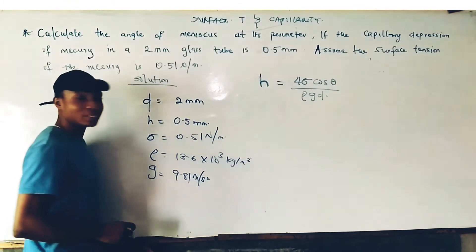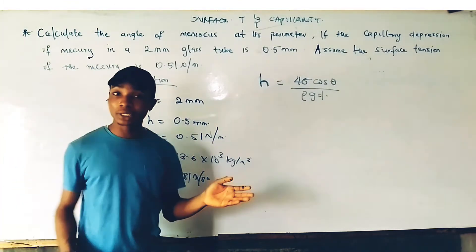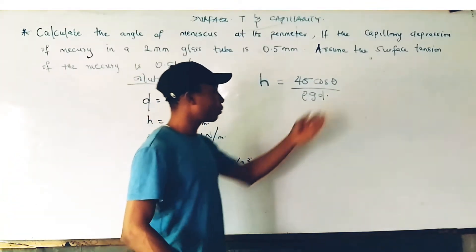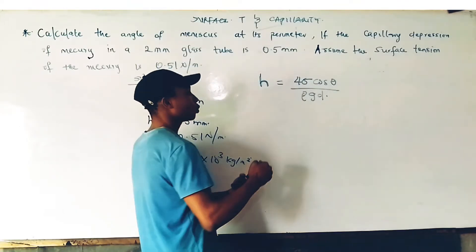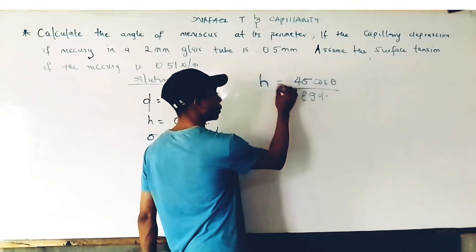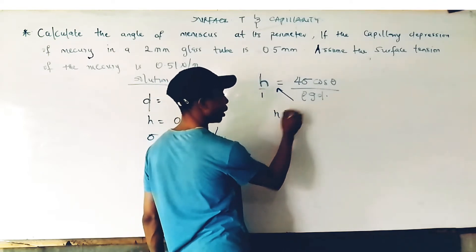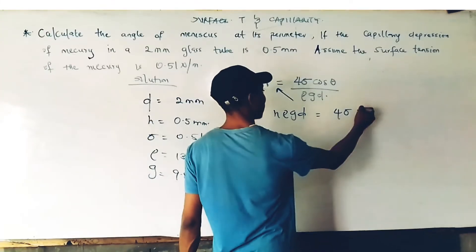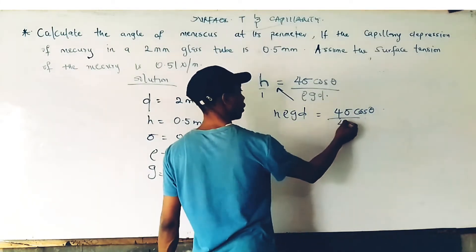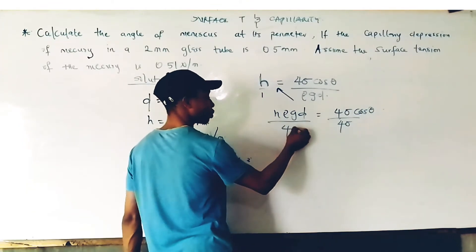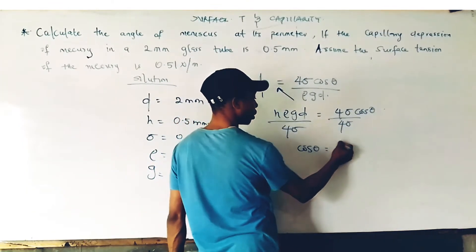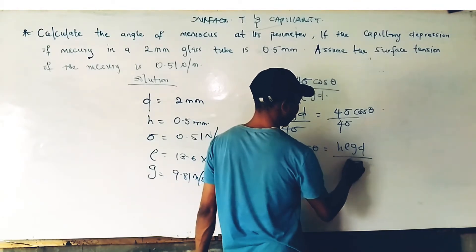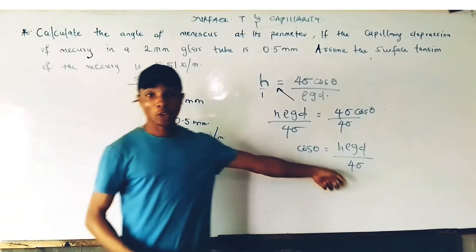Since we have all these values, we substitute into our equation to calculate theta. To make theta the subject of the formula, we rearrange: H times density times g times diameter equals 4 times surface tension times cosine theta. Therefore, cosine theta equals H times density times g times diameter, divided by 4 times surface tension.